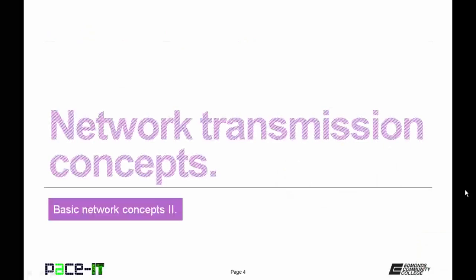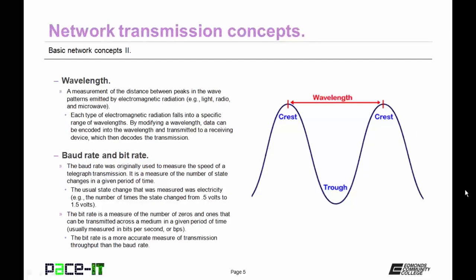I'm going to begin with the network transmission concepts. The first concept is wavelength. Wavelength is a measurement of the distance between peaks in a wave pattern emitted by electromagnetic radiation, as in light waves, radio waves, or microwaves. Each type of electromagnetic radiation falls into a specific range of wavelengths. By modifying a wavelength, data can be encoded into the wavelength and transmitted to a receiving device which then decodes the transmission.